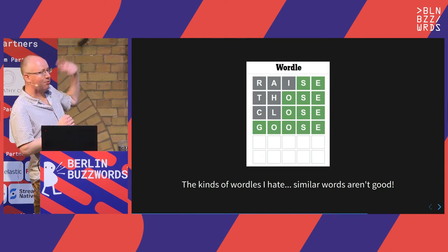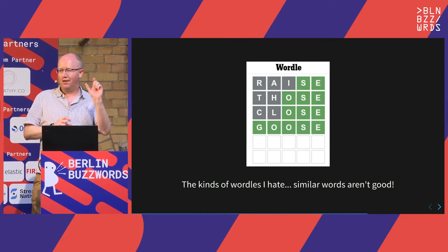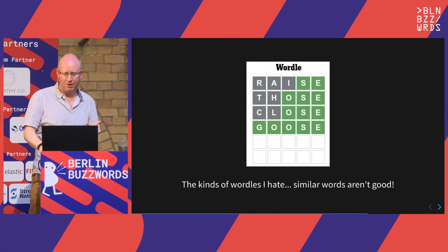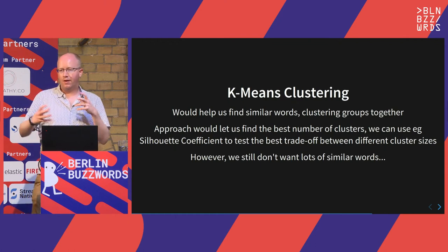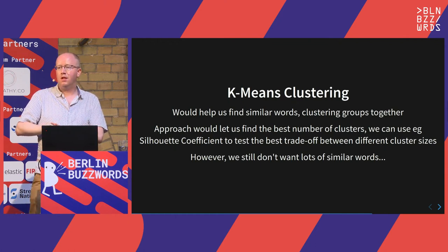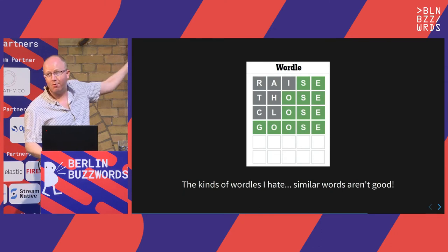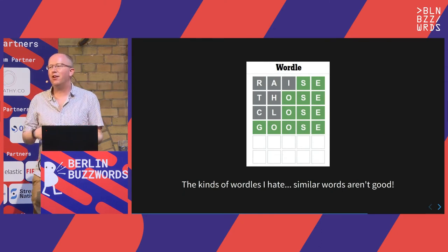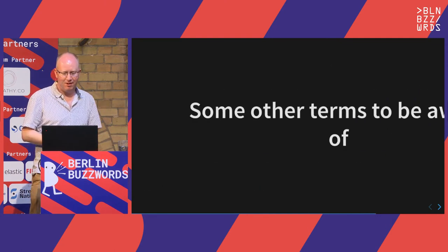These are the kind of Wordles I don't like — you get a load of letters but there are lots of possibilities between them. K-means clustering is a system where you figure out what things go together, but if we do that for Wordle we're just going to get these terrible cases. We don't really want to know what are the worst Wordle words — we can kind of find those out for ourselves every day. K-means is not really going to help us.